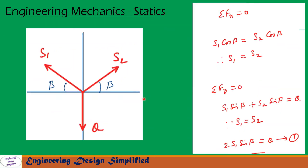Let us see at point E for equilibrium: sigma Fx equal to 0. The horizontal forces give us S1 cos beta equal to S2 cos beta. From this, we get S1 equal to S2, since cos beta cancels on both sides.